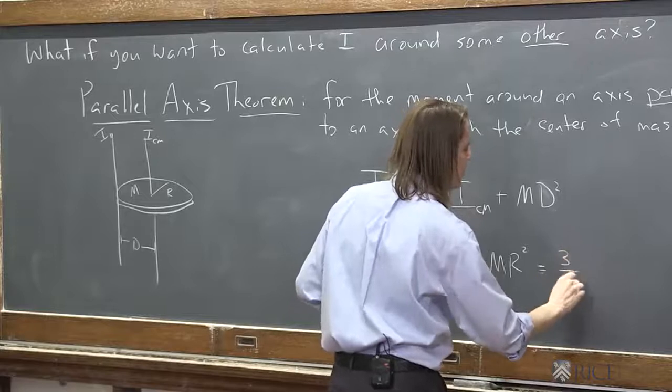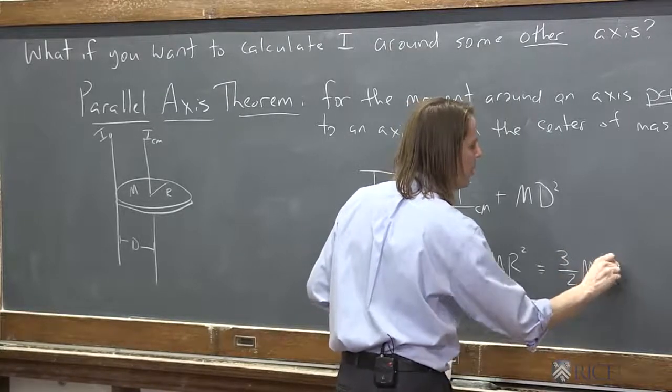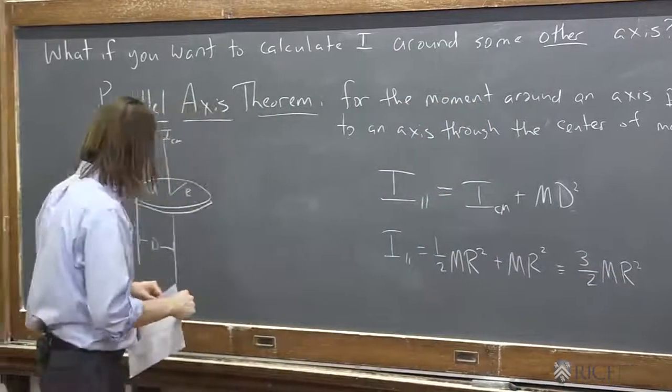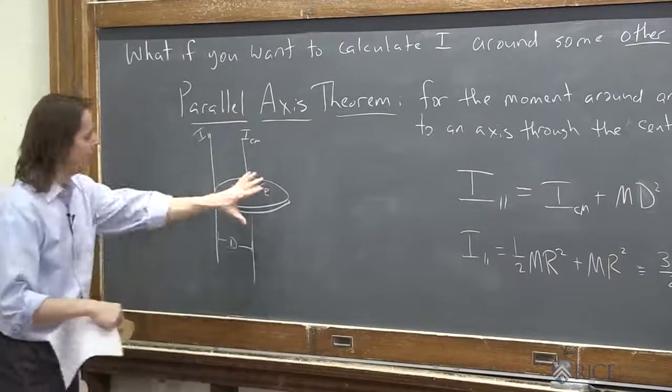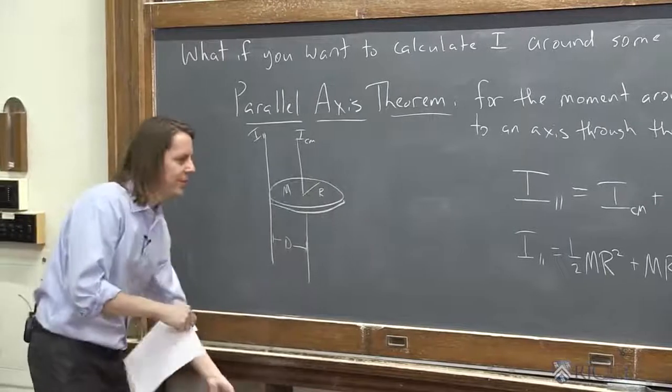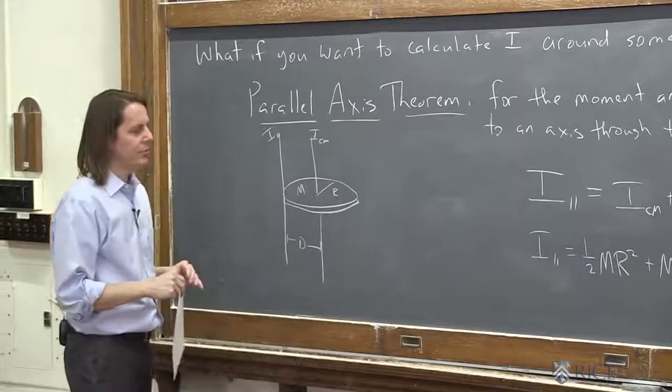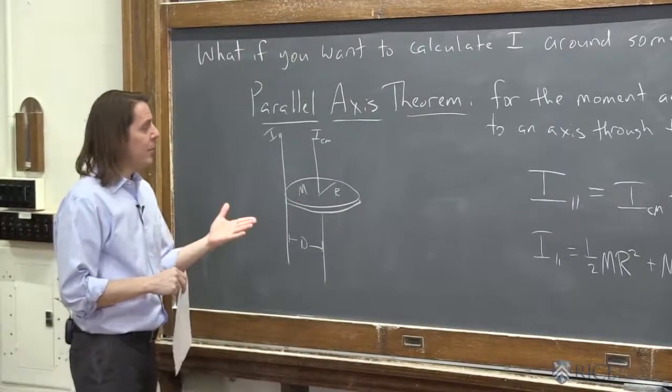So if you want to do a quick check, you could say, should it be bigger or smaller? It should be bigger, because more of the mass is moving farther away, more of the mass moving farther from the axis than here, where the mass is at different distances from the axis. So that makes sense.